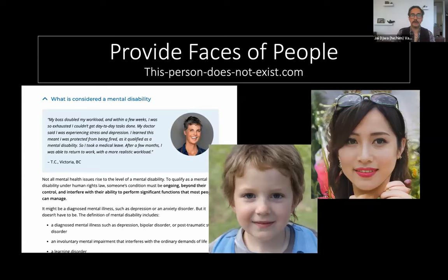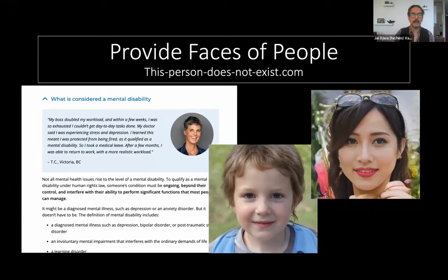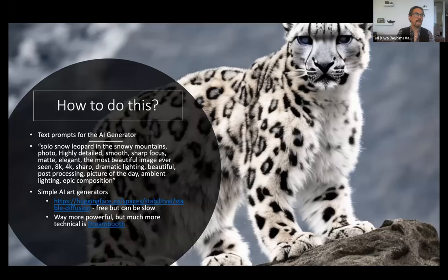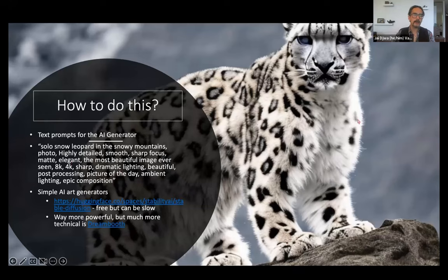There's a site called thispersondoesnotexist.com. You can see the quality of this has really increased. One of my clients is using pictures from it for examples that help clarify the human aspect of a particular legal issue on their website. So how do you do all of this? These text prompts — here was a prompt: solo snow leopard in the snowy mountains, photo, highly detailed, smooth, et cetera. The result was actually quite lovely. In most of these tools, you can request a batch of images at the same time.